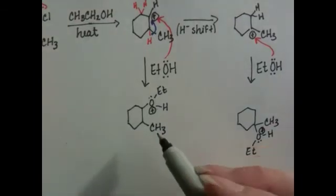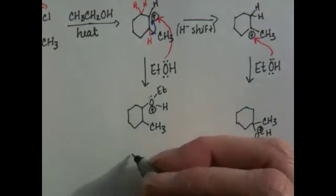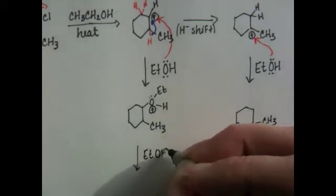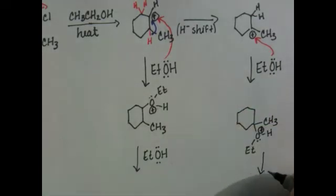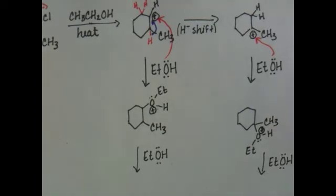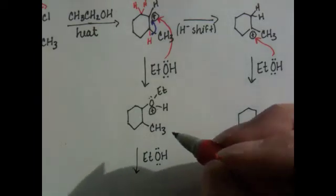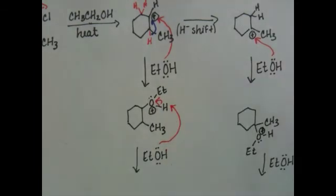And then you want to resolve this positive charge on the oxygen. You're going to use a second ethanol molecule to abstract that hydrogen to put the oxygen-hydrogen bonding electrons back onto the oxygen atom as a lone pair.